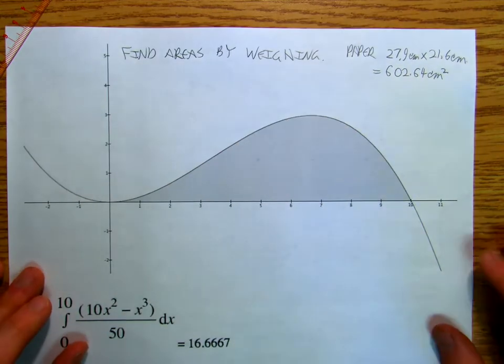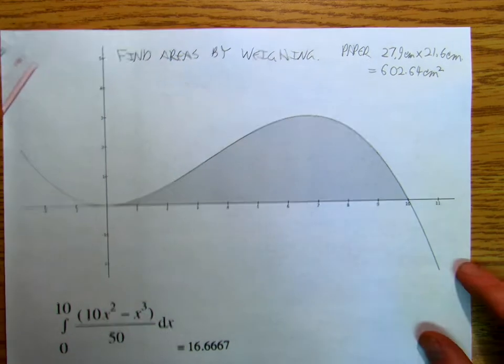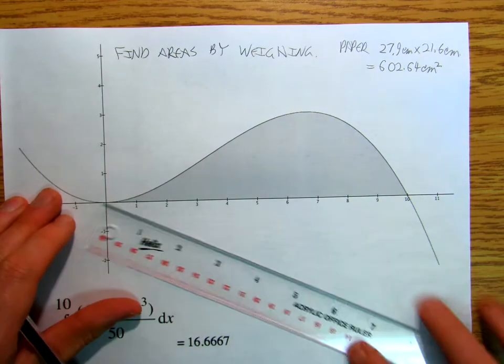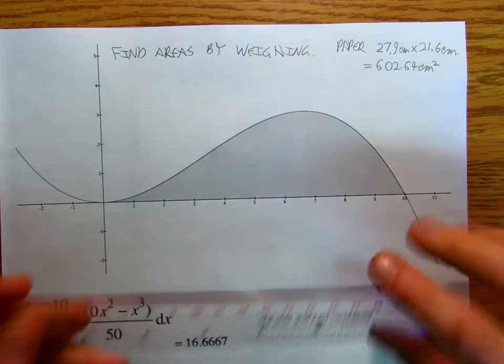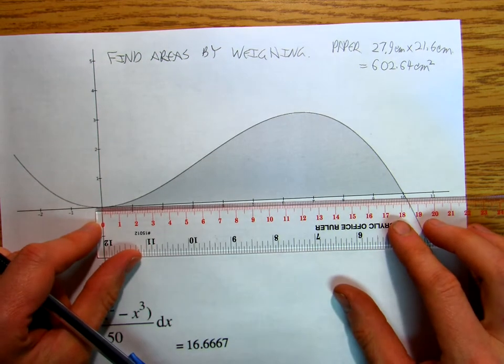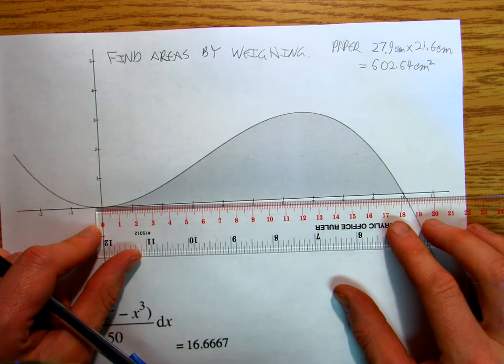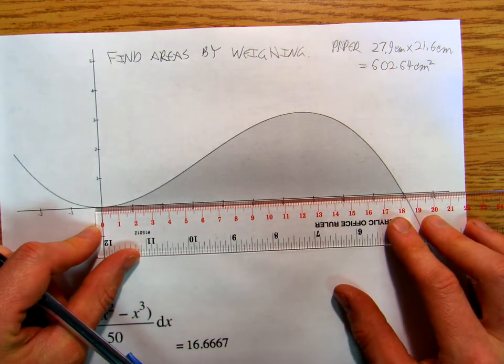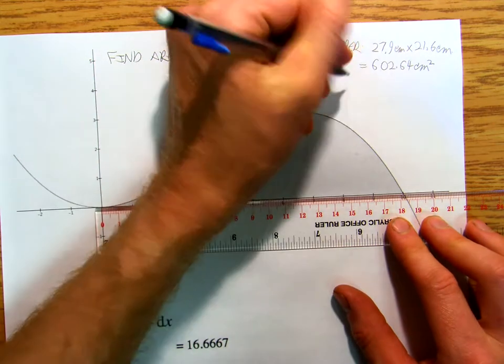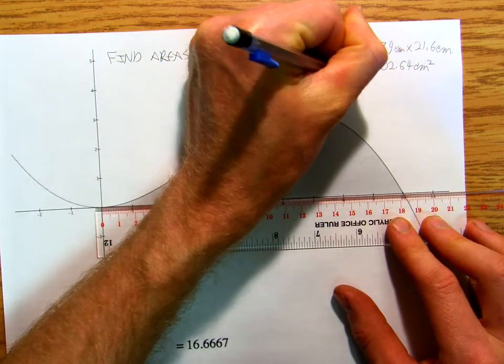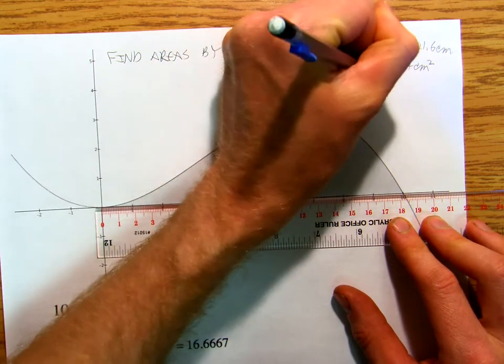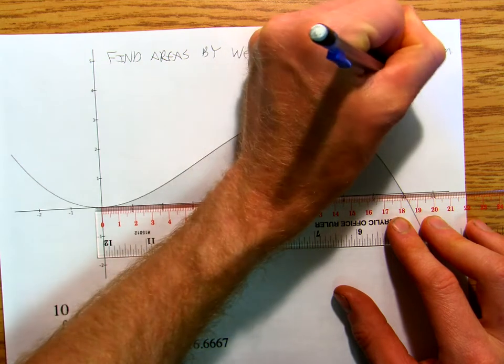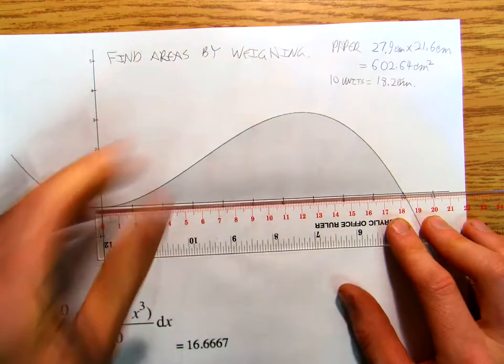Okay, now I'm going to go and I'm going to measure my scale. So I'm going to say 10 units is 18.2 centimeters. So I'm going to measure the scale in that direction.